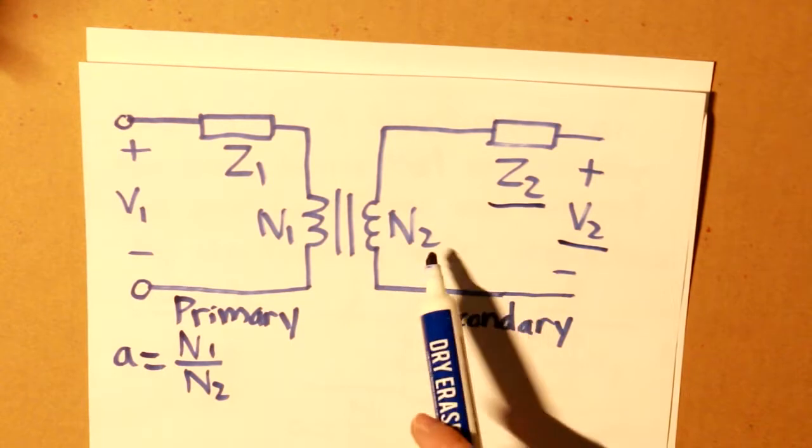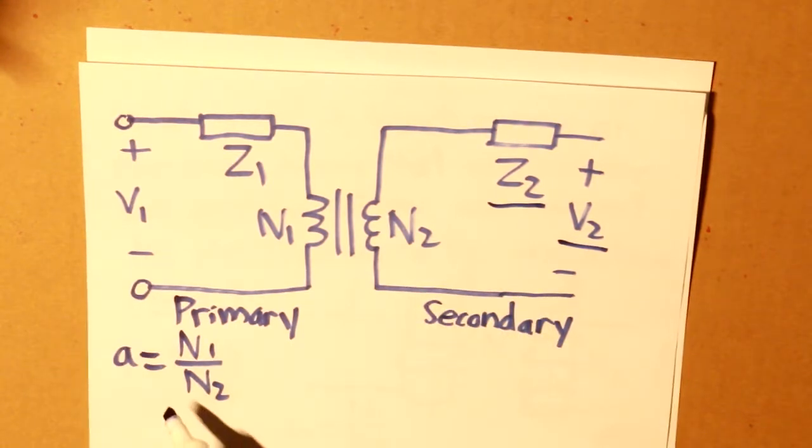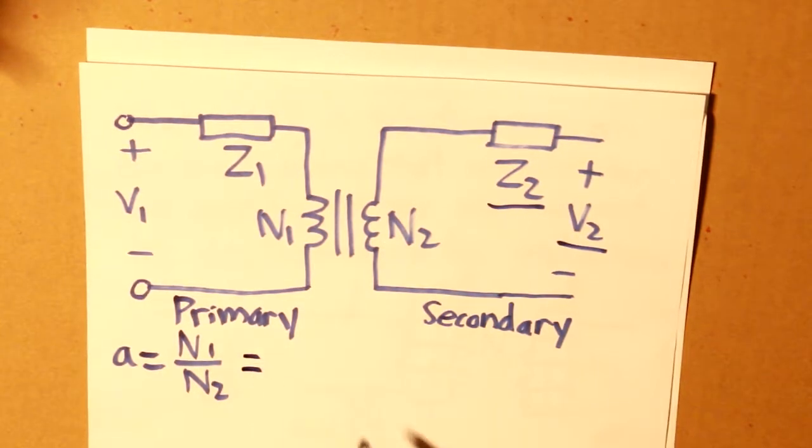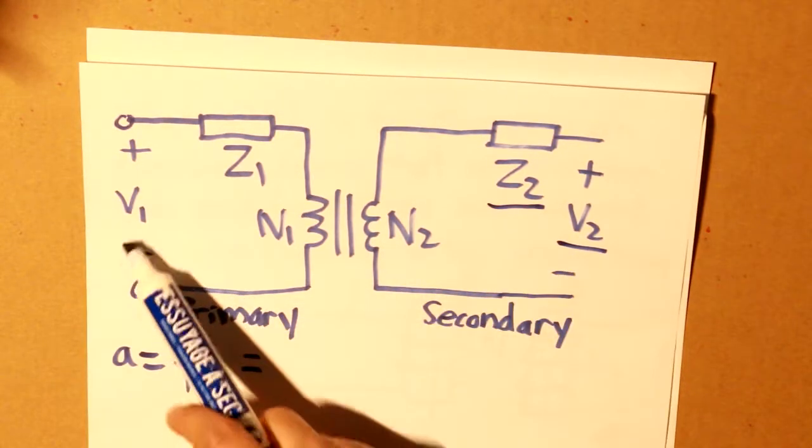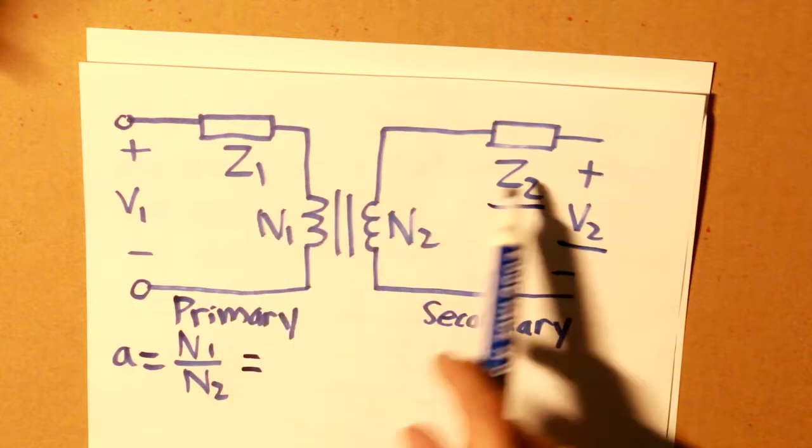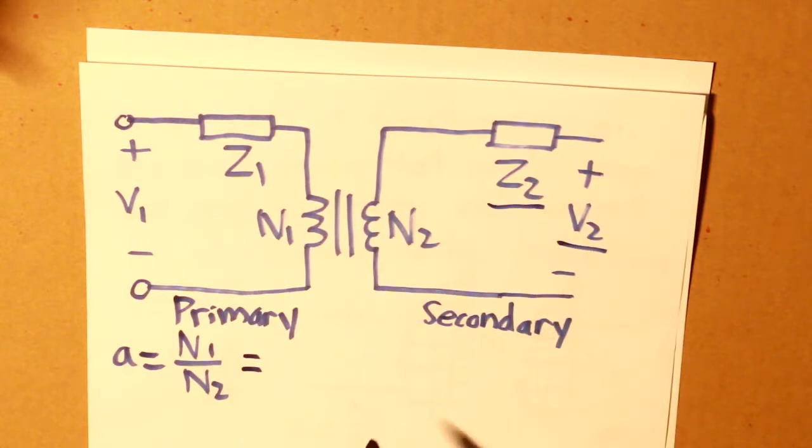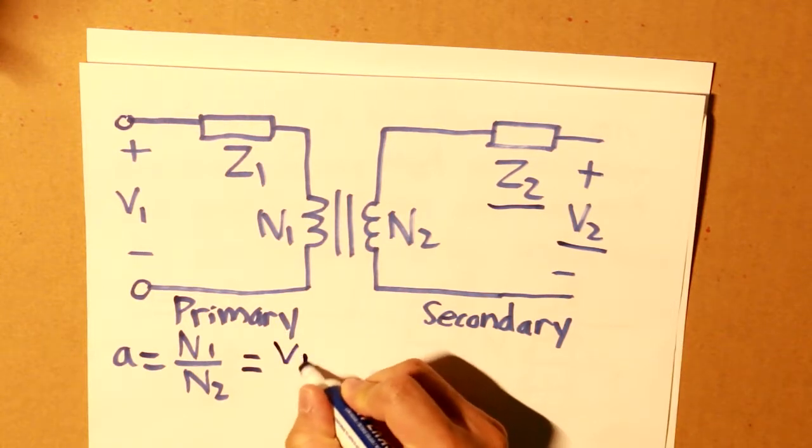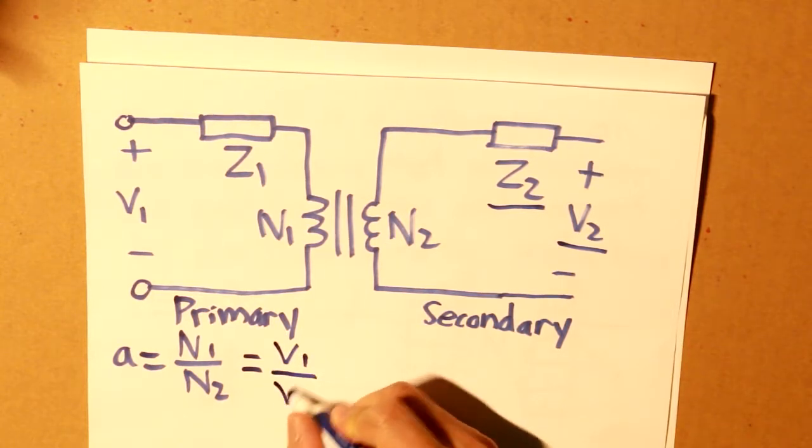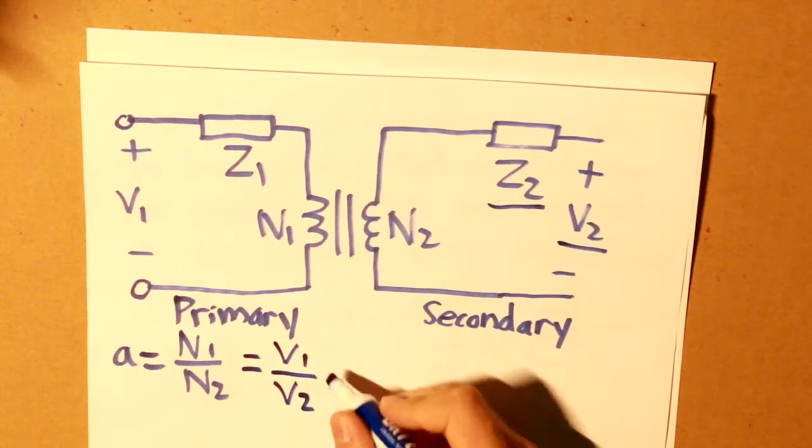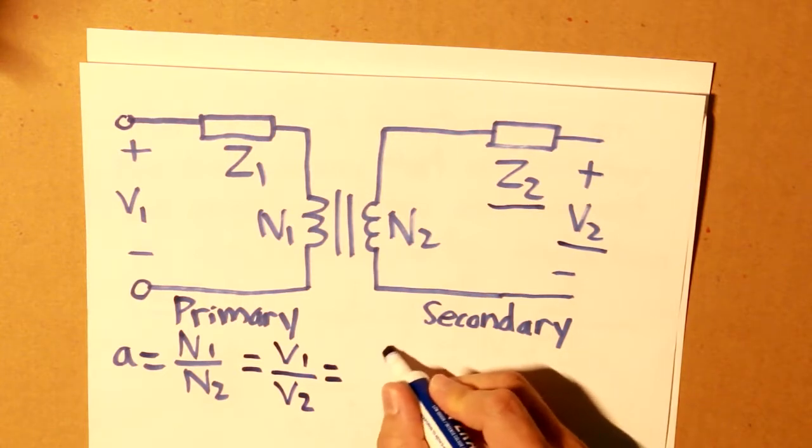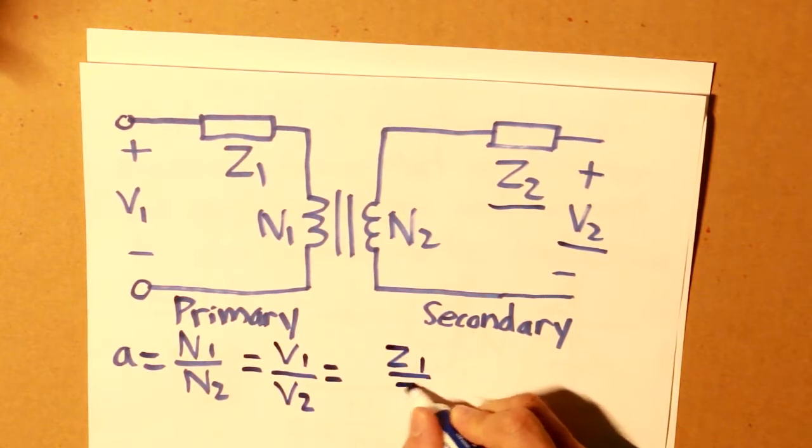If we are given the number of turns for n1 and n2, because a is also equal to the ratio of these voltages and the impedances. So a can also be equal to v1 divided by v2 and z1 divided by z2.